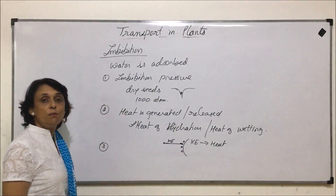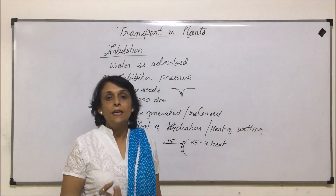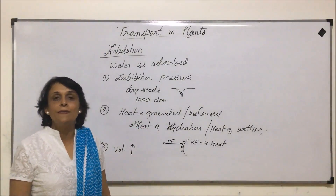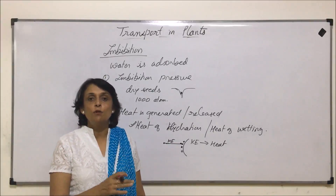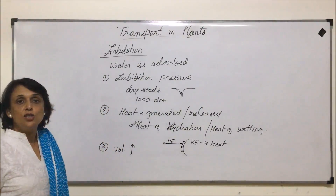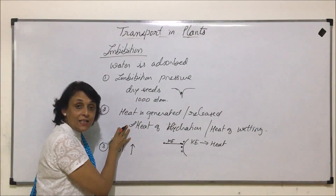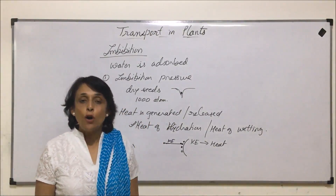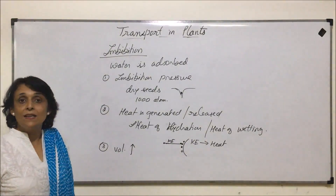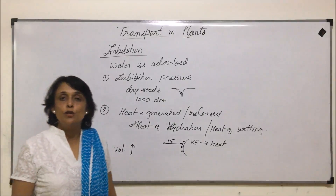Third, a change which we see in imbibition is change in volume. Volume increases, and as mentioned earlier, in rainy season wooden doors swell because of imbibition — they become thicker and we are not able to close them properly. So during imbibition, pressure gets generated, heat is produced, and there is a change in volume of the substance imbibing water. The next important term is water potential, so let us take the definitions and the factors which regulate water potential.